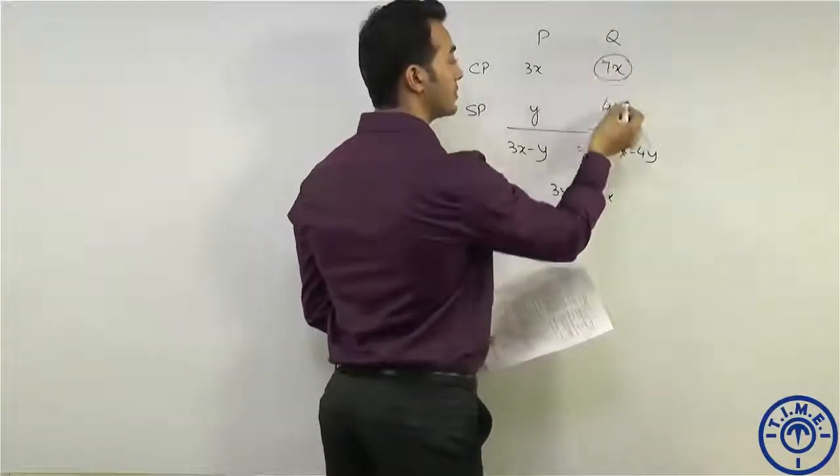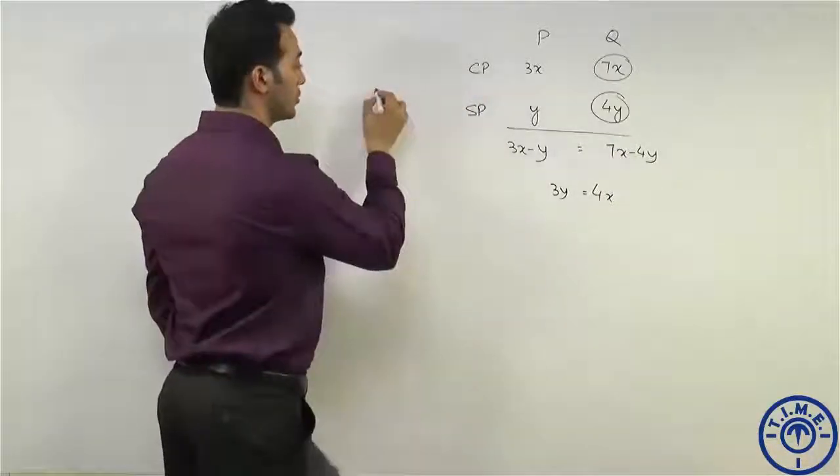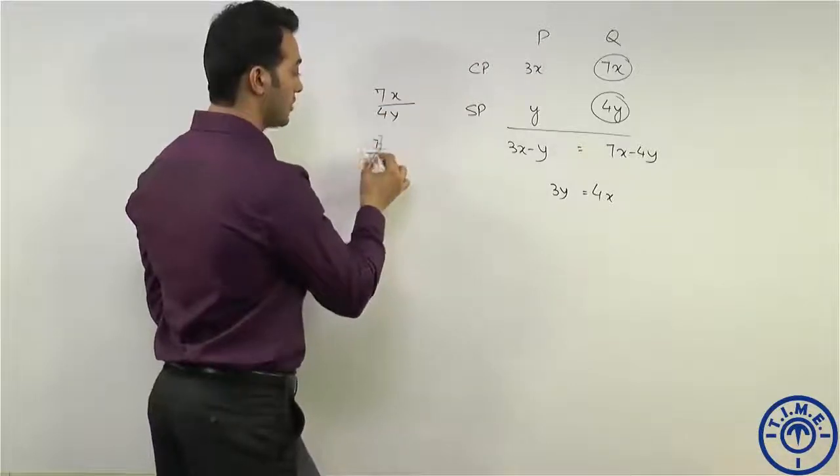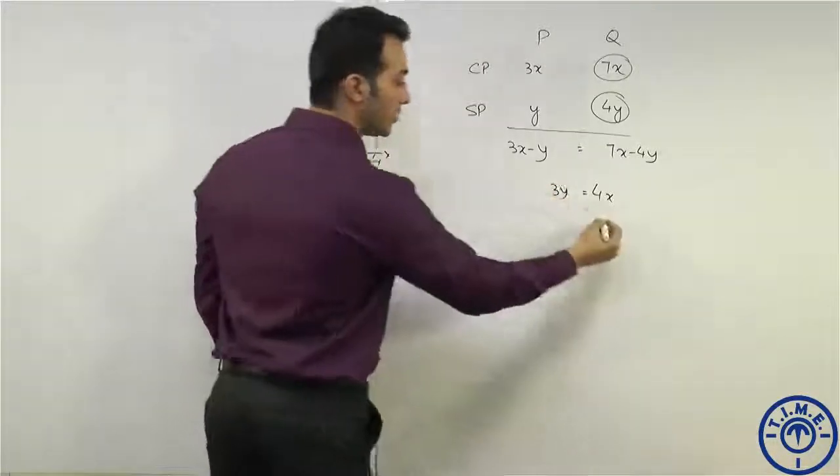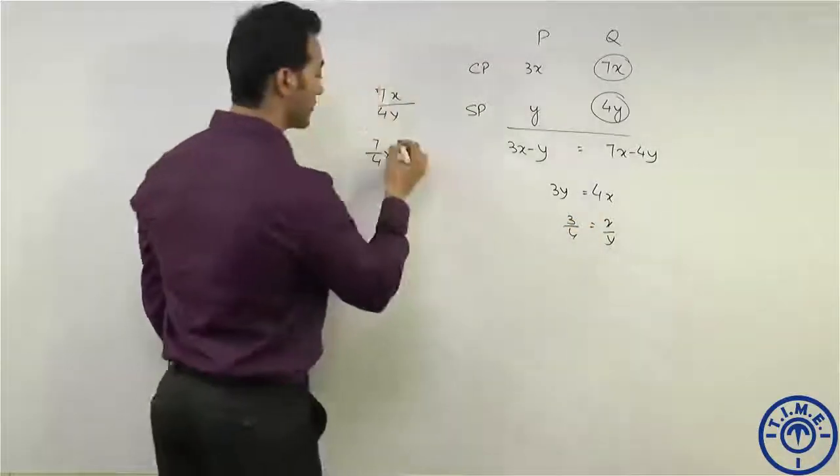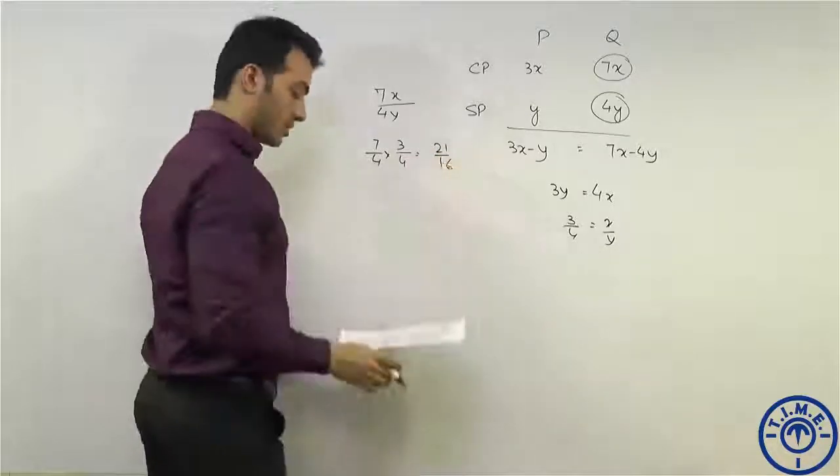This is the cost price of Q and this is the selling price of Q. We have to determine the ratio of these two. In short, we need to find 7x upon 4y, which is 7/4 times x/y. As we can see, this is 3/4. Replacing, we get 3/4 here, which gives us 21/16 as the answer.